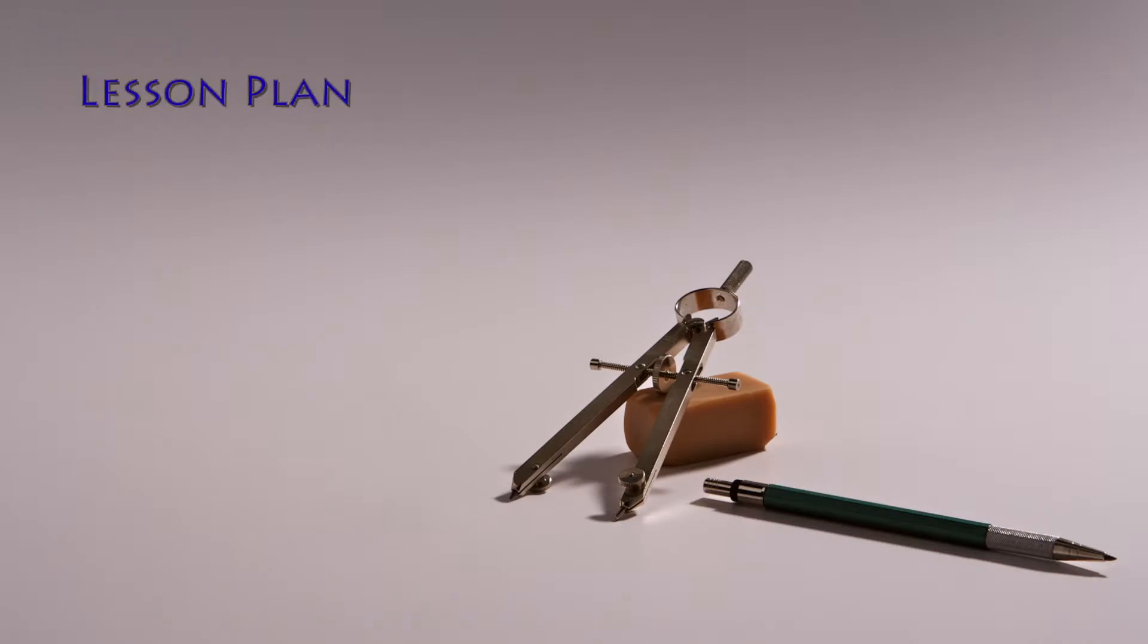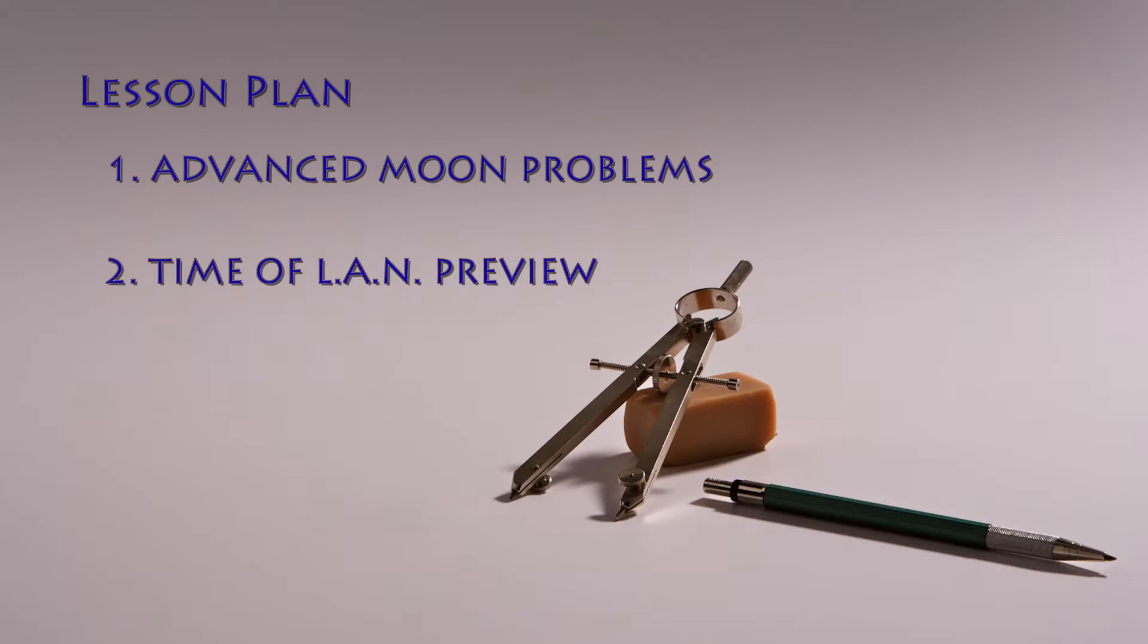In this episode, we'll hammer home moon problems with a more difficult example. We'll talk briefly about the time of local apparent noon, and we'll finish our discussion of time by talking about moving ships.